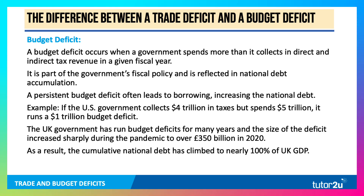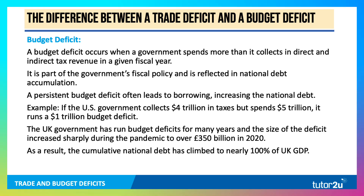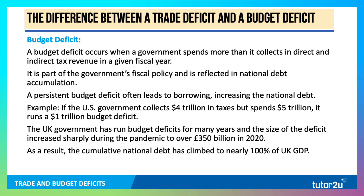The UK government has run budget deficits for many years. The size of the deficit certainly increased very sharply during the pandemic to over £350 billion. The government was taking in less in tax — the economy shrank by 10 percent — but had to spend a lot more on furlough and increased spending on the NHS.